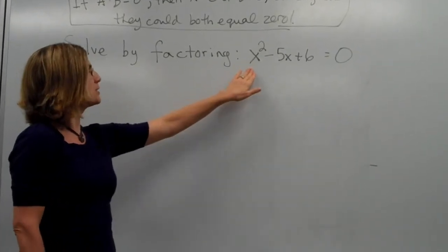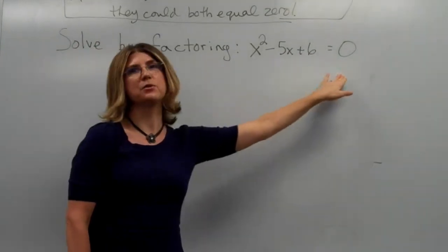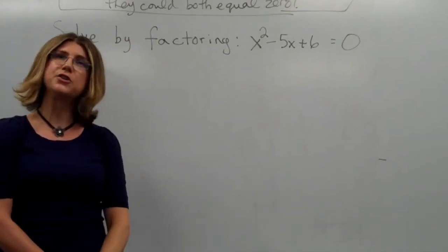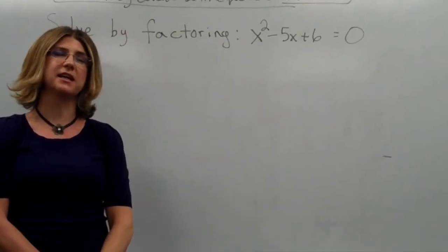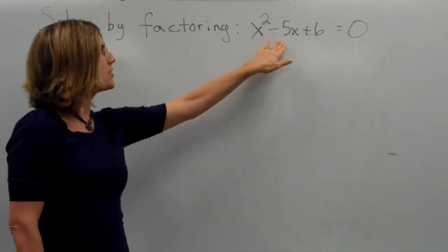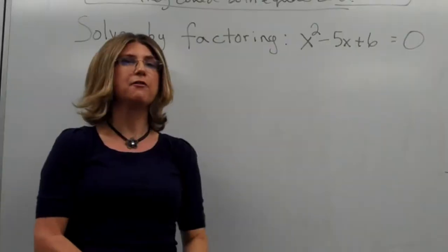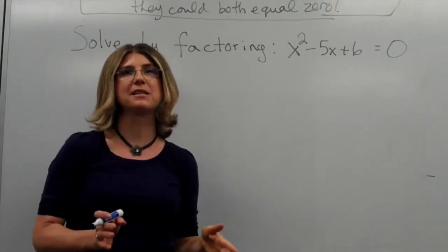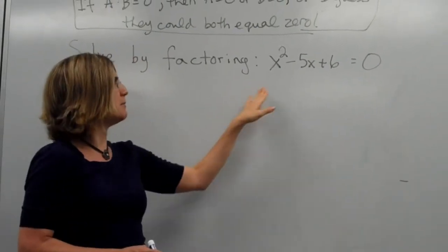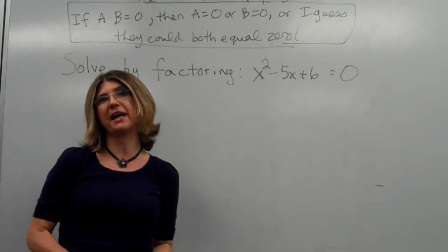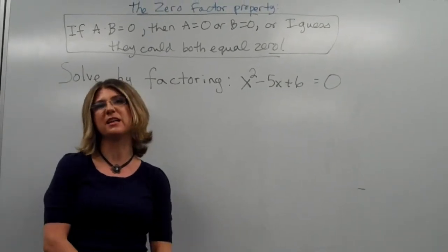So, we have x squared minus 5x plus 6 equals zero. We'd like to think of two numbers that multiply to give six and add up so that they give us five. Now, if you want to be sneaky, you can even put the signs in. So, we want them to multiply to give six and add up to negative five, or you can put the signs in at the end. Your choice.